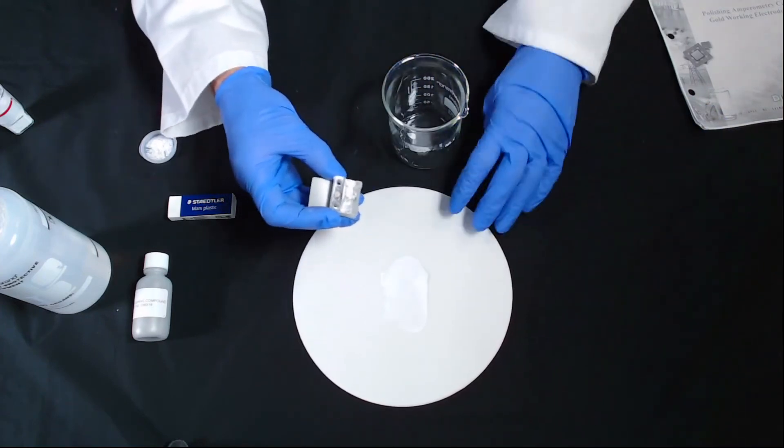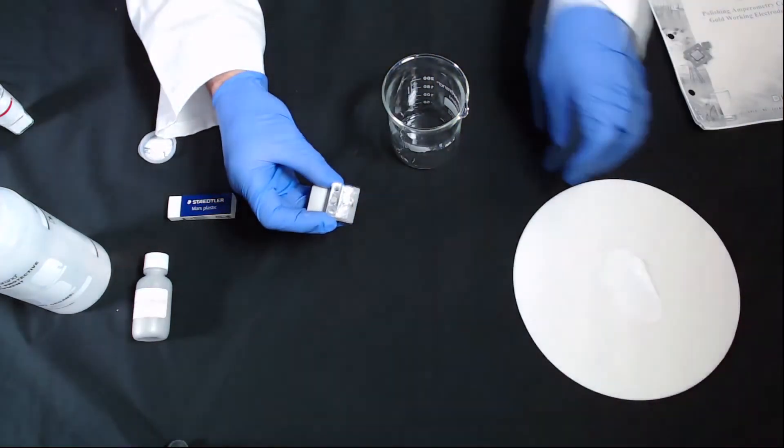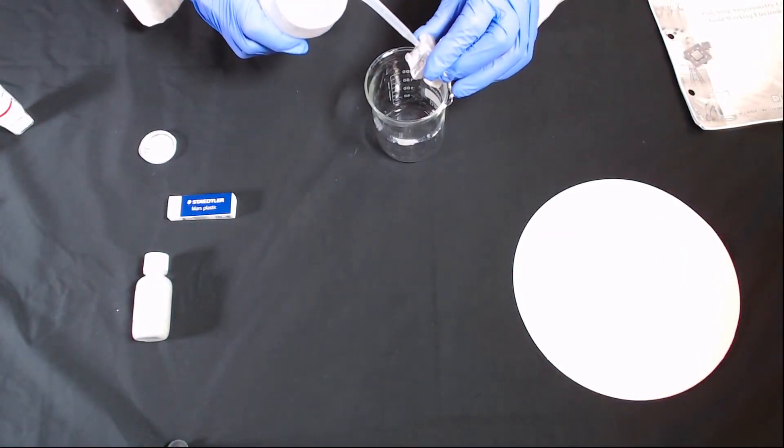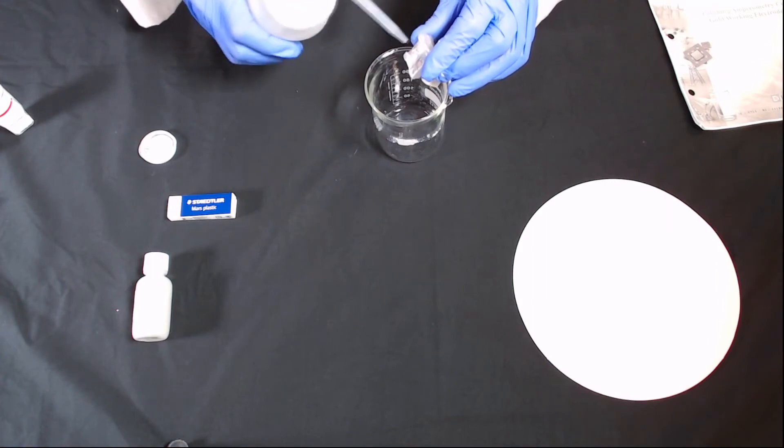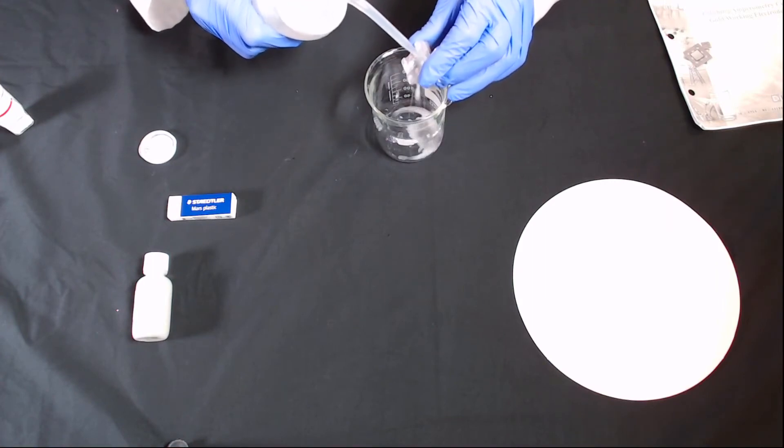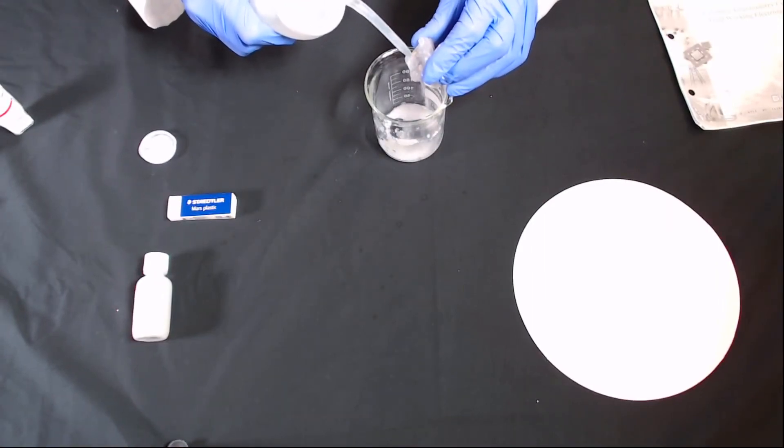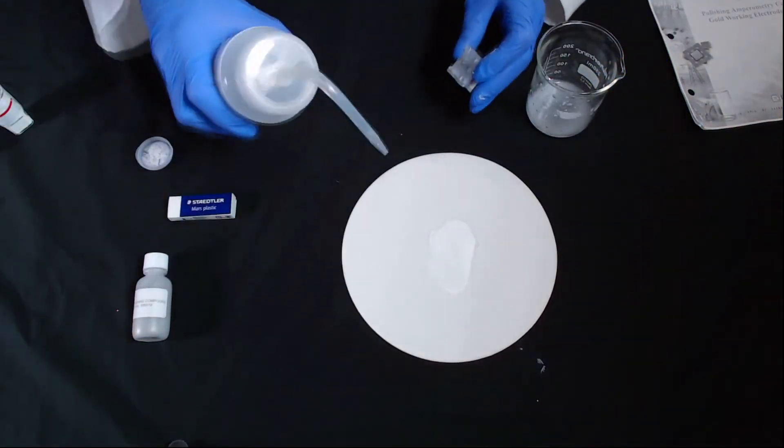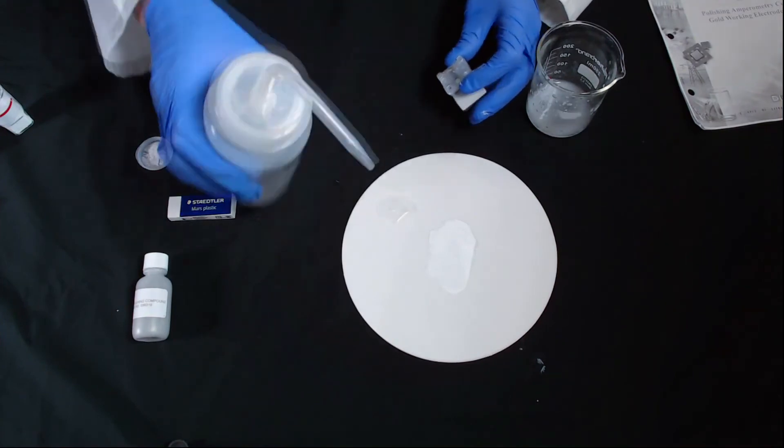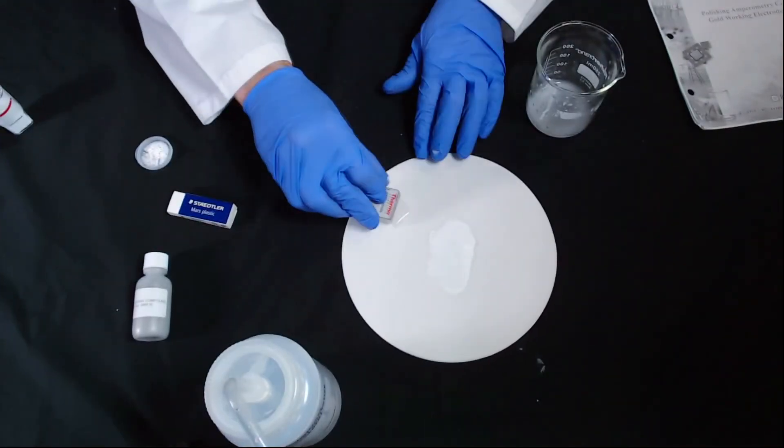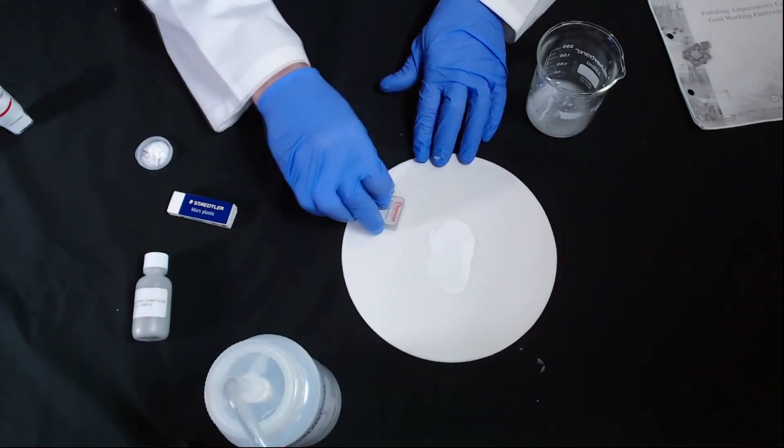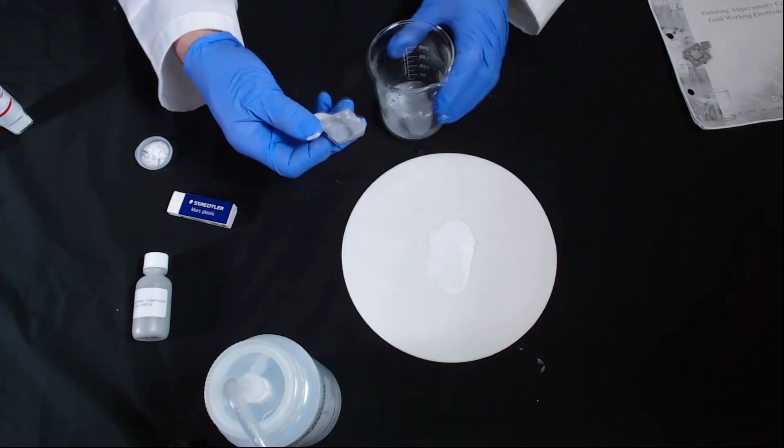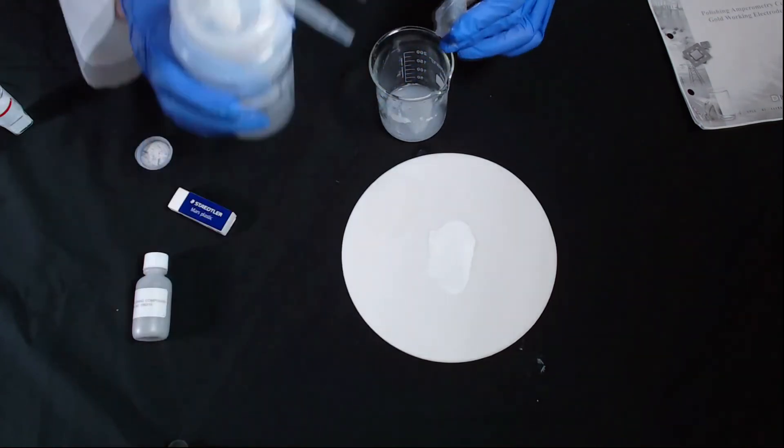We'll obviously polish for longer than that normally, and it's important to rinse off the electrode afterwards. We're going to take our beaker and use the wash bottle to rinse off the compound. We'll also put some deionized water onto the pad in a different location and use it to clean it off there as well, removing the compound this way. Then we'll repeat that process and rinse it off.